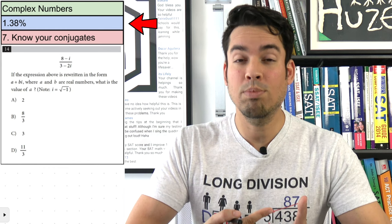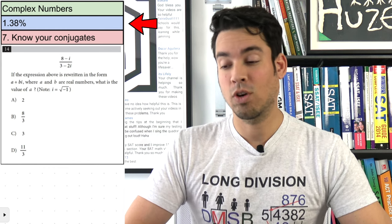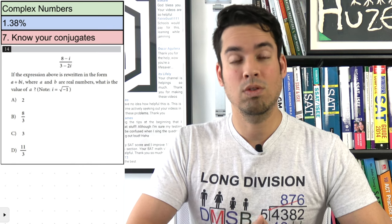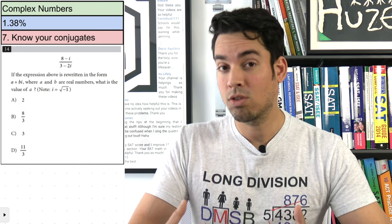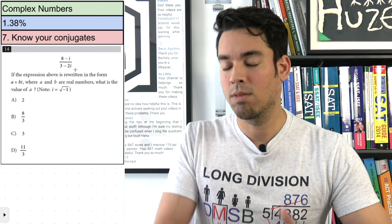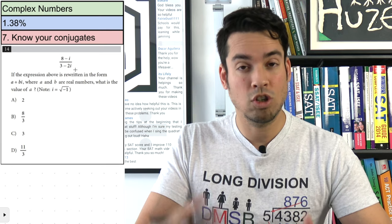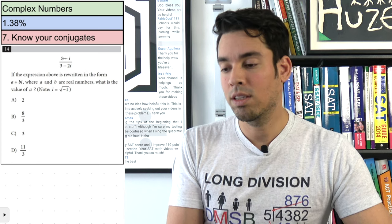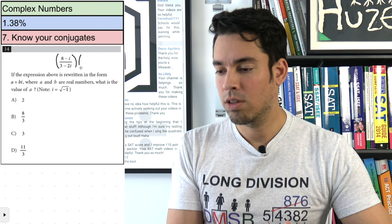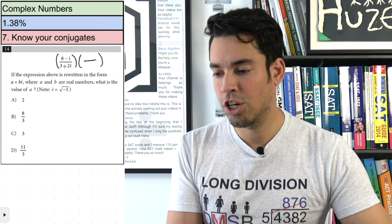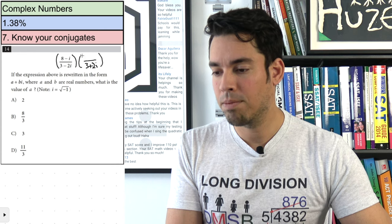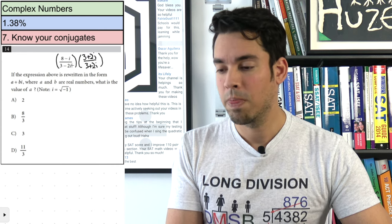Next are complex numbers, constituting 1.38% of the test. The strategy: know your conjugates. Everyone knows i = √(−1) and i² = −1, but when you have an imaginary number in the denominator you need to eliminate it. Conjugates are the same expression with the sign between terms swapped. Multiply numerator and denominator by the conjugate of the denominator to make it real.